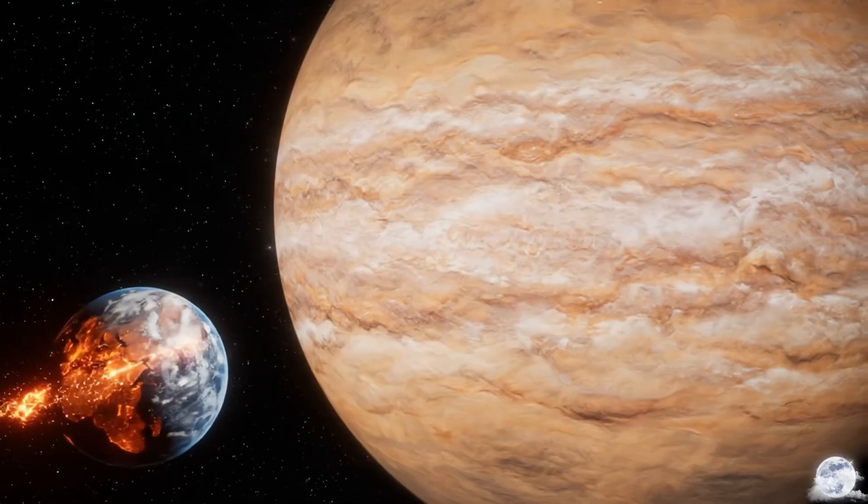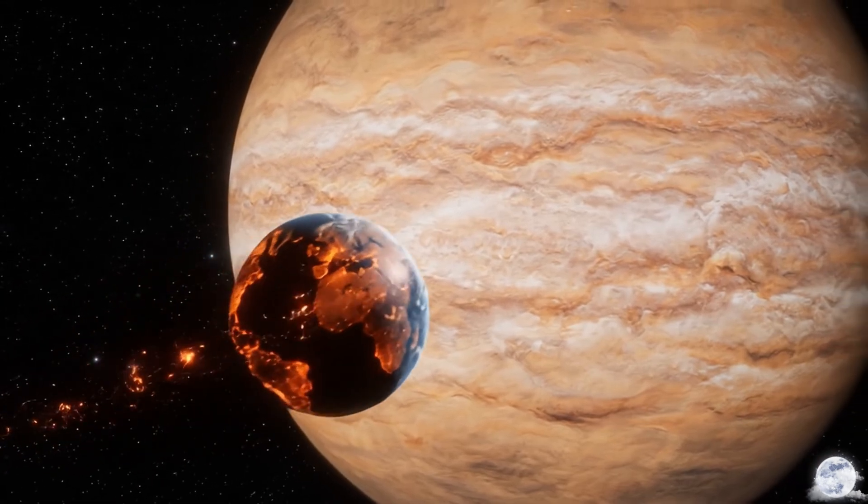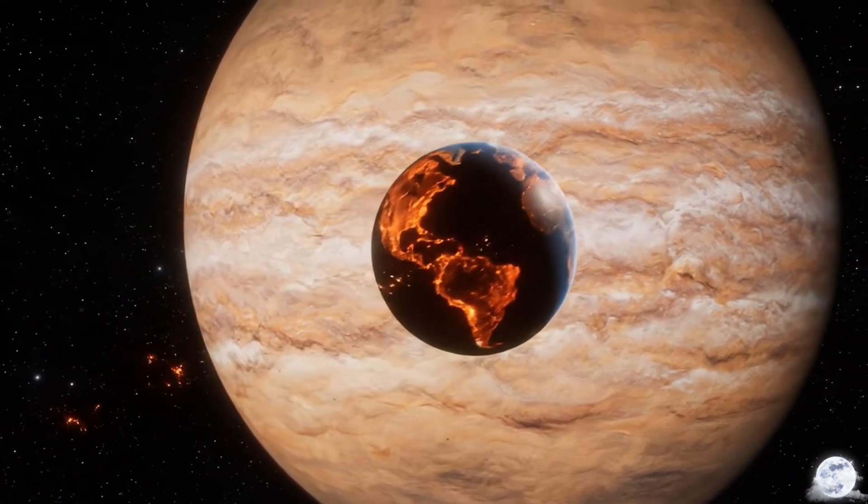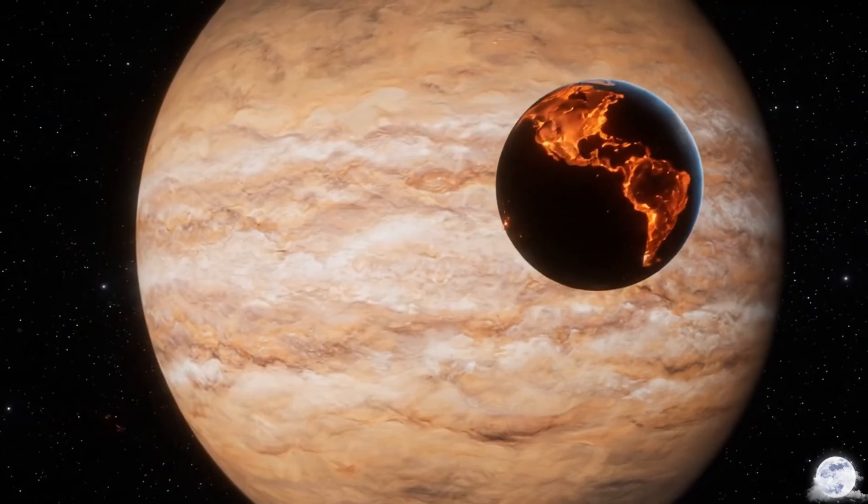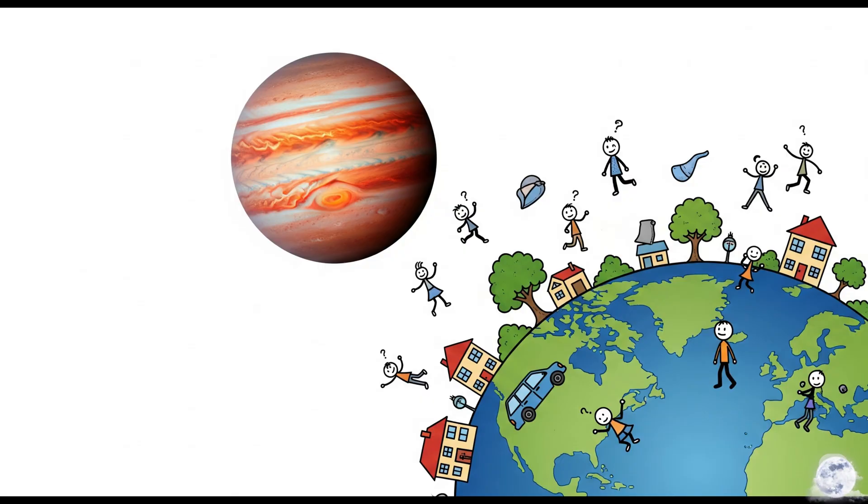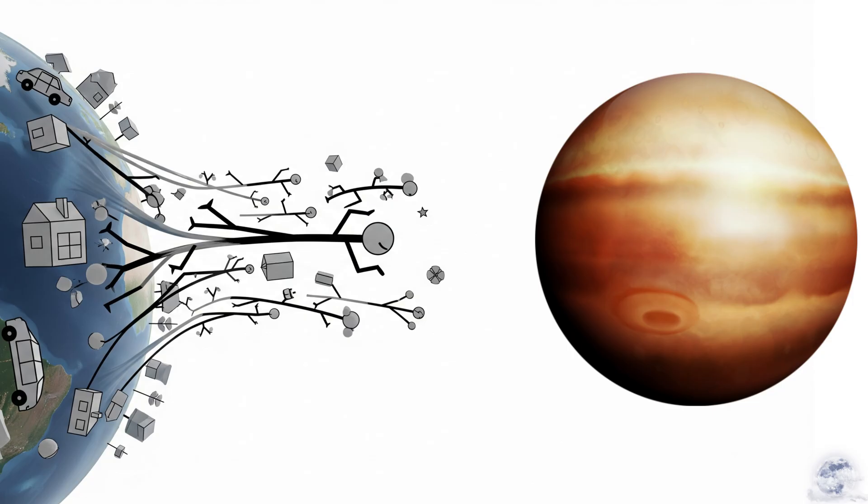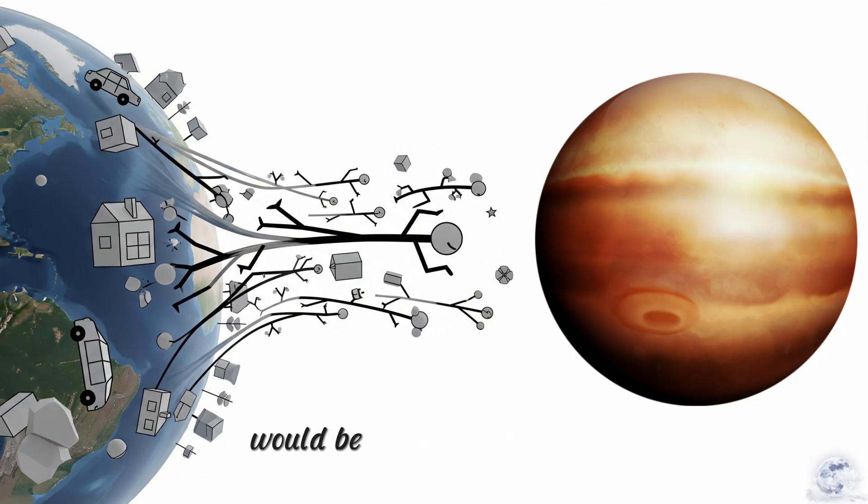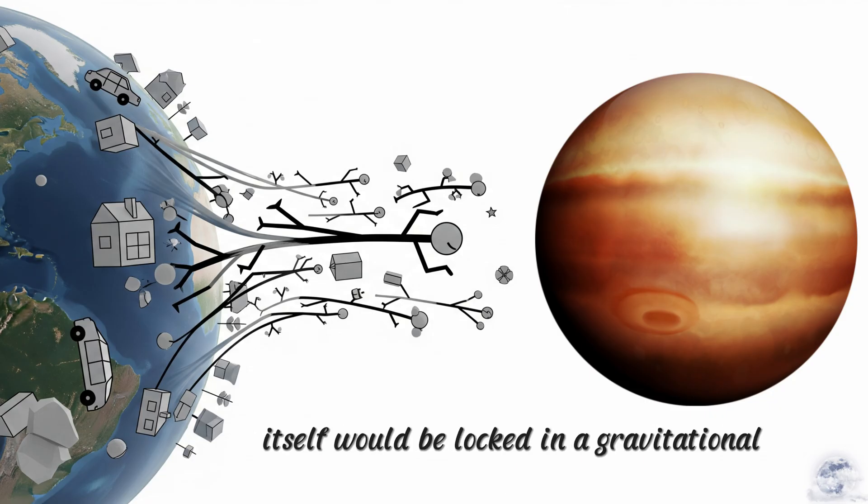But you'd only have a moment to appreciate it. In the first second, the gravitational effects would begin. Jupiter is over 300 times more massive than Earth. And at the moon's distance, its gravitational pull on us would be immense. Everything on the side of Earth facing Jupiter would suddenly become significantly lighter, while everything on the far side would be pulled away from the Earth's core. The planet itself would be locked in a gravitational vice.